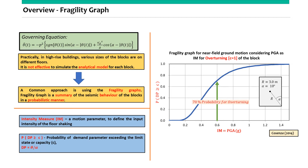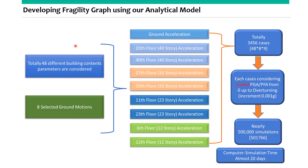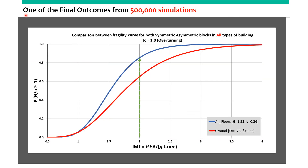When developing the fragility graph, we considered 48 different blocks and 8 ground motions along with various floor accelerations — totaling nearly 3,500 cases. We also considered the scale-up effect, and finally nearly 500,000 simulations were run to find the results. This is one of the final outcomes from those 500,000 simulations — our developed fragility graph.